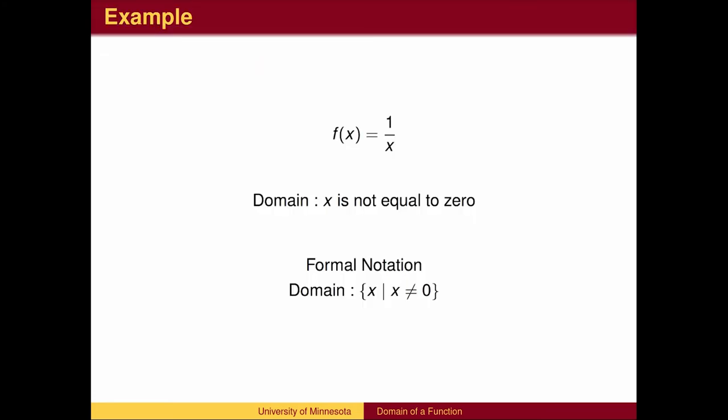The domain of the function f of x equals 1 over x is all real numbers except 0. In the formal set builder notation, the domain is the set of all real numbers x such that x is not equal to 0. The vertical bar stands for such that.